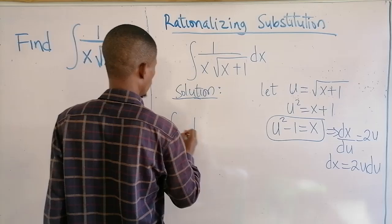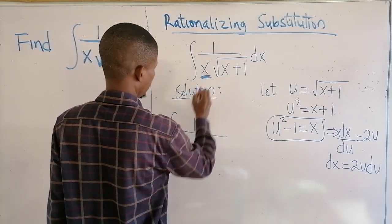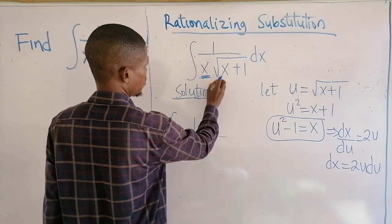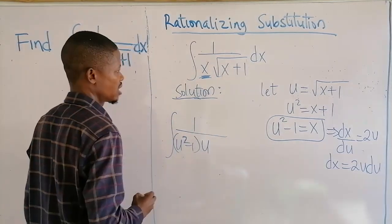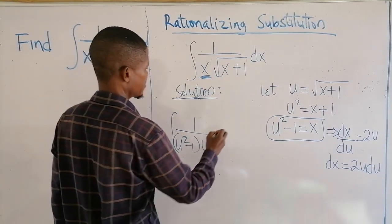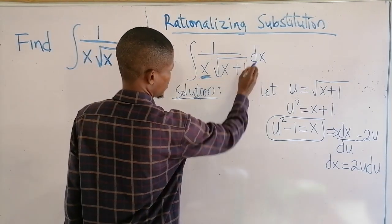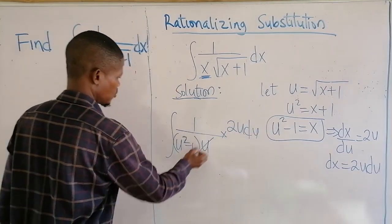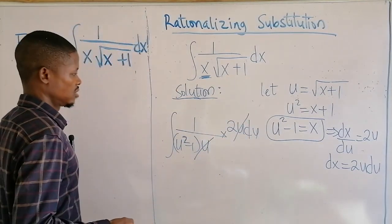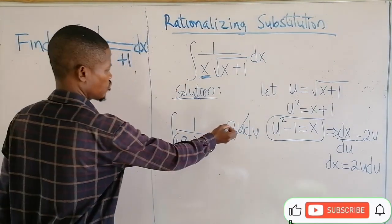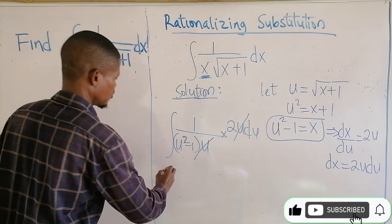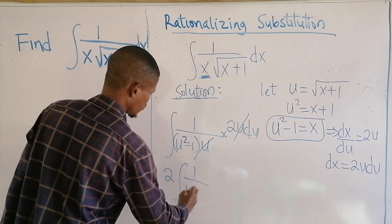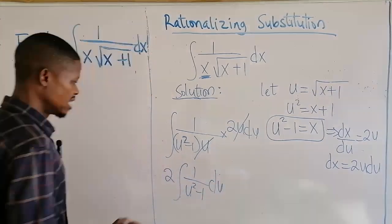So we are going to have 1 over — this expression is u squared minus 1, and this radical is u. Don't forget dx is 2u du. So the u in the radical and the u from dx cancel, and the 2 can go outside the integral.